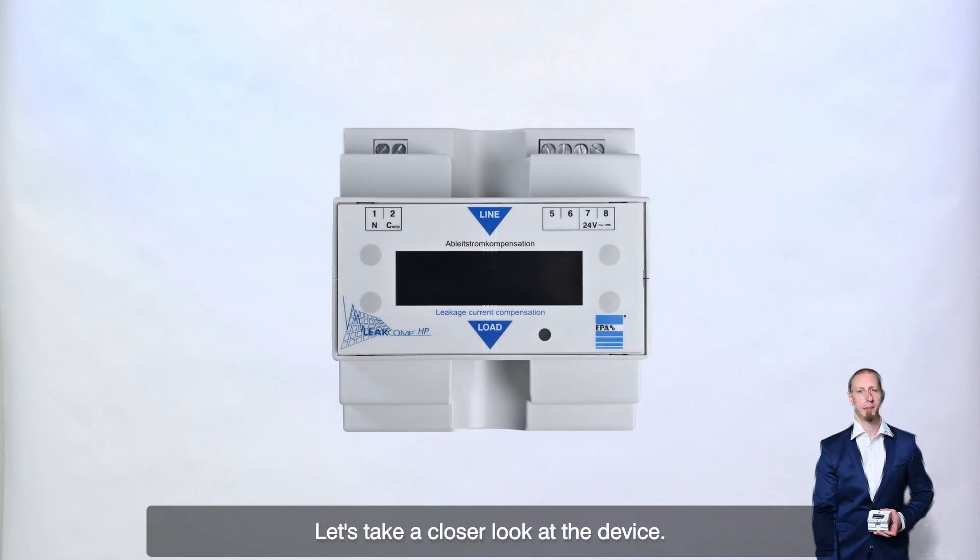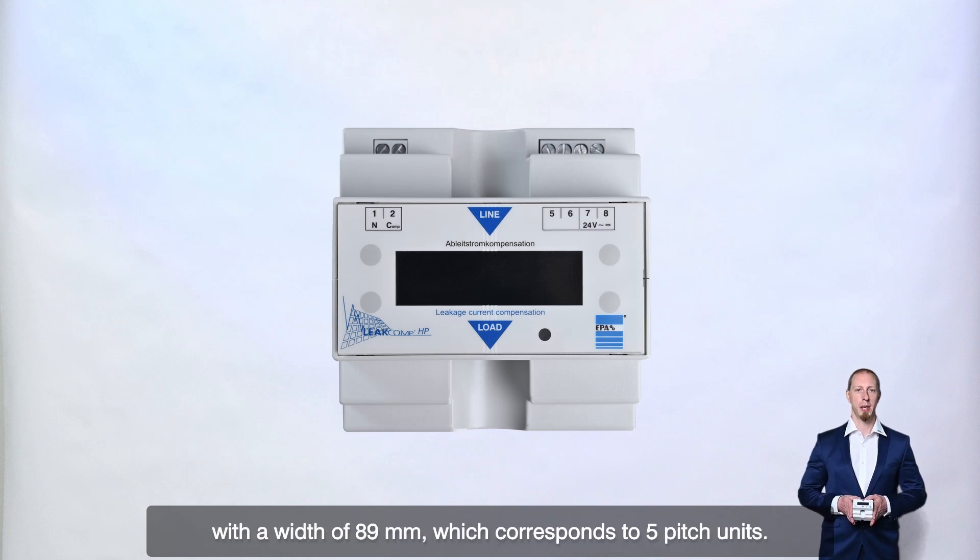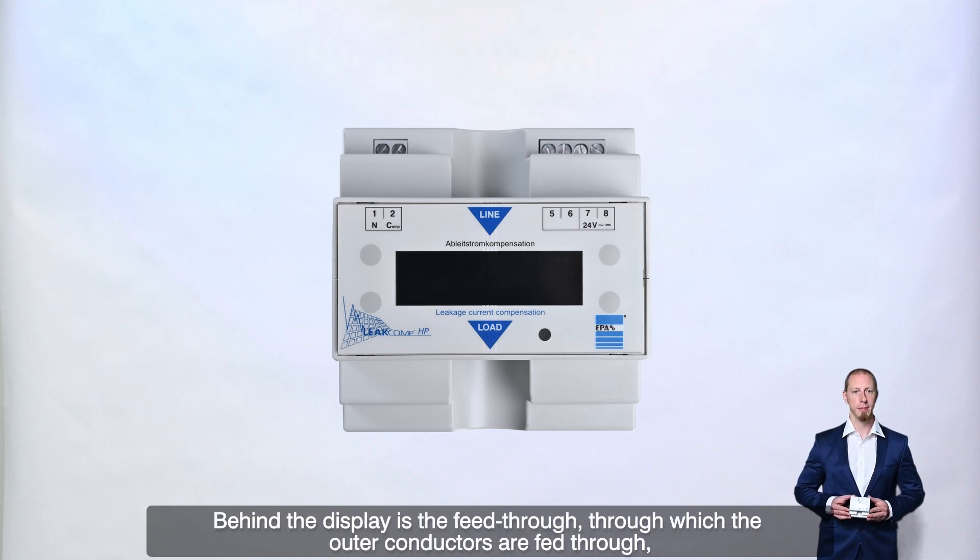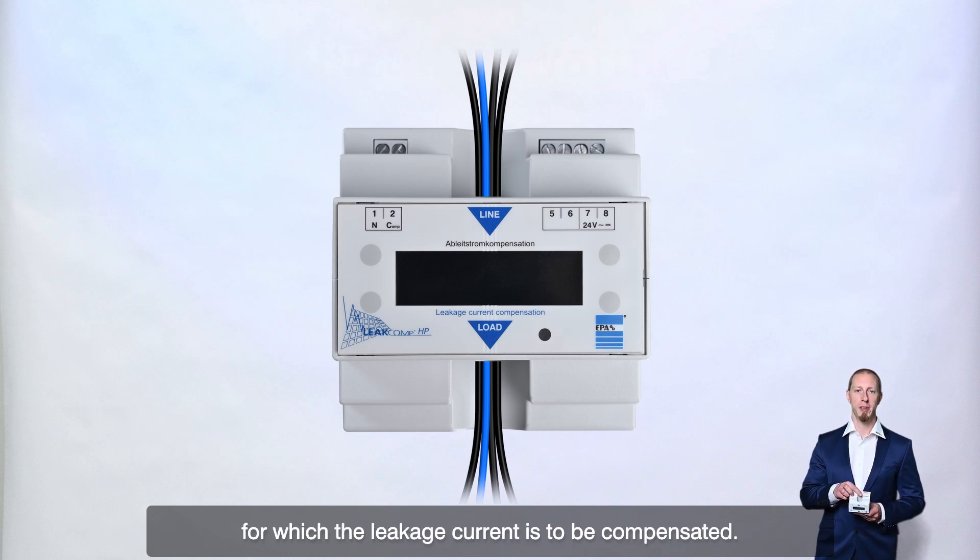Let's take a closer look at the device. The Leacomp HP is a top-head rail-mounted device with a width of 89 mm, which corresponds to 5 pitch units. Behind the display is the feed-through, through which the outer conductors are fed through, for which the leakage current is to be compensated.